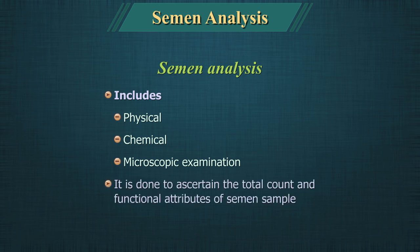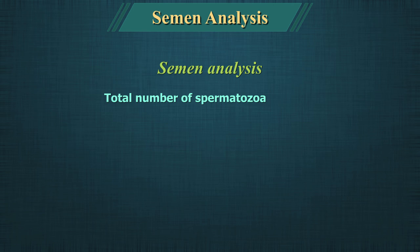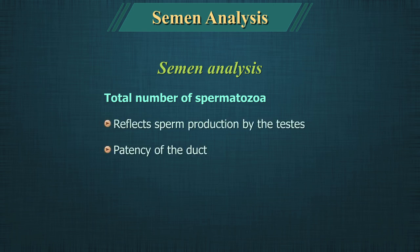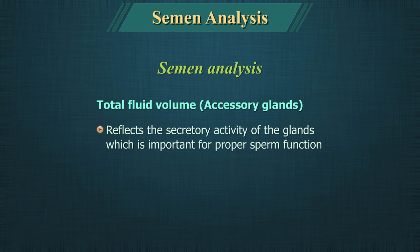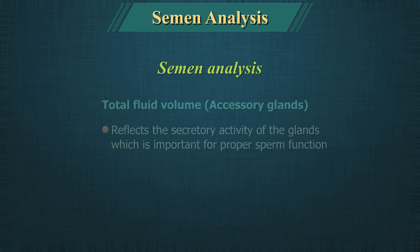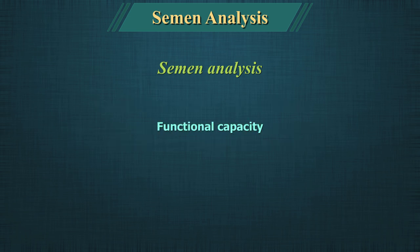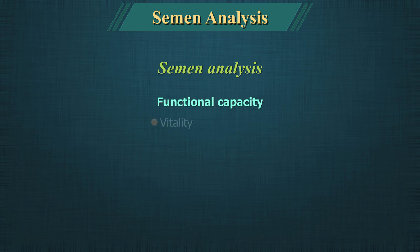It is done to ascertain the total count and functional attributes of a semen sample. The total number of spermatozoa reflects sperm production by the testes and the patency of the post-testicular duct system. Total fluid volume contributed by the various accessory glands reflects their secretory activity, which is important for proper sperm function. The functional capacity of the spermatozoa is assessed by their vitality, motility and morphology.